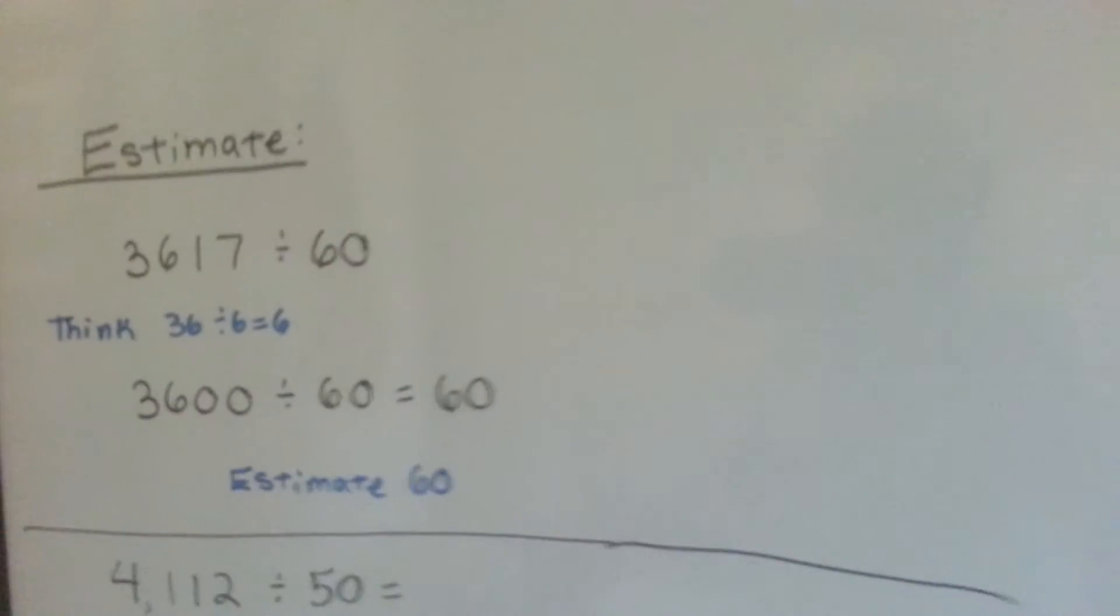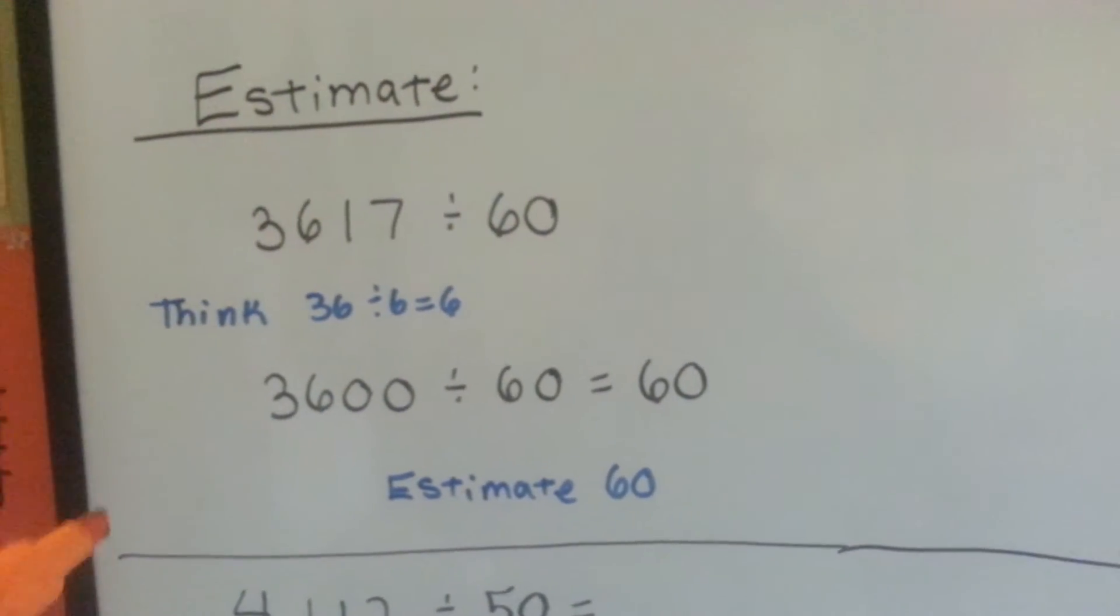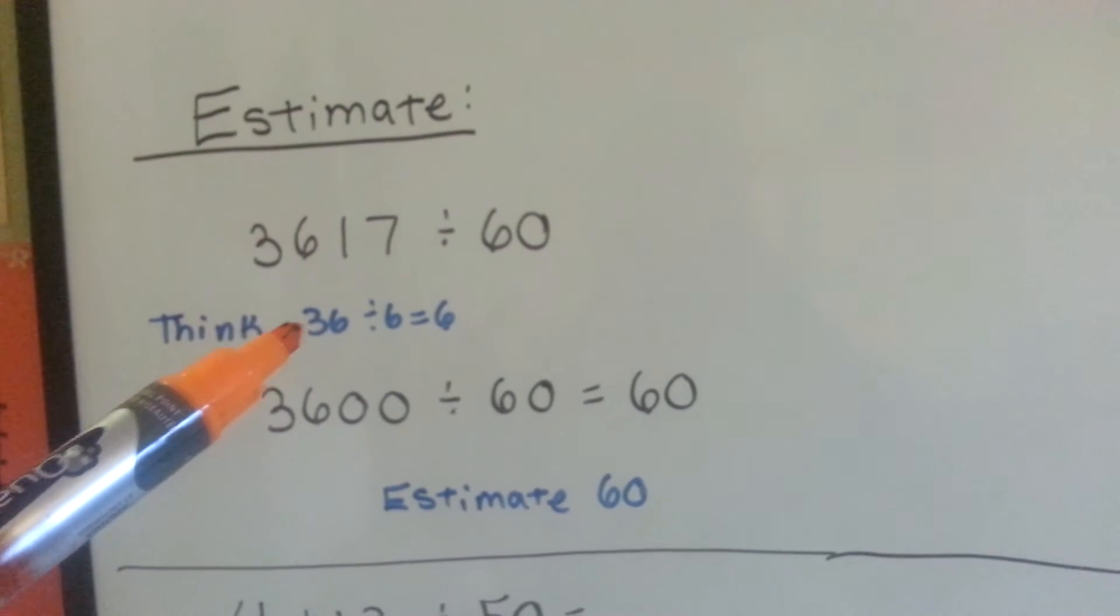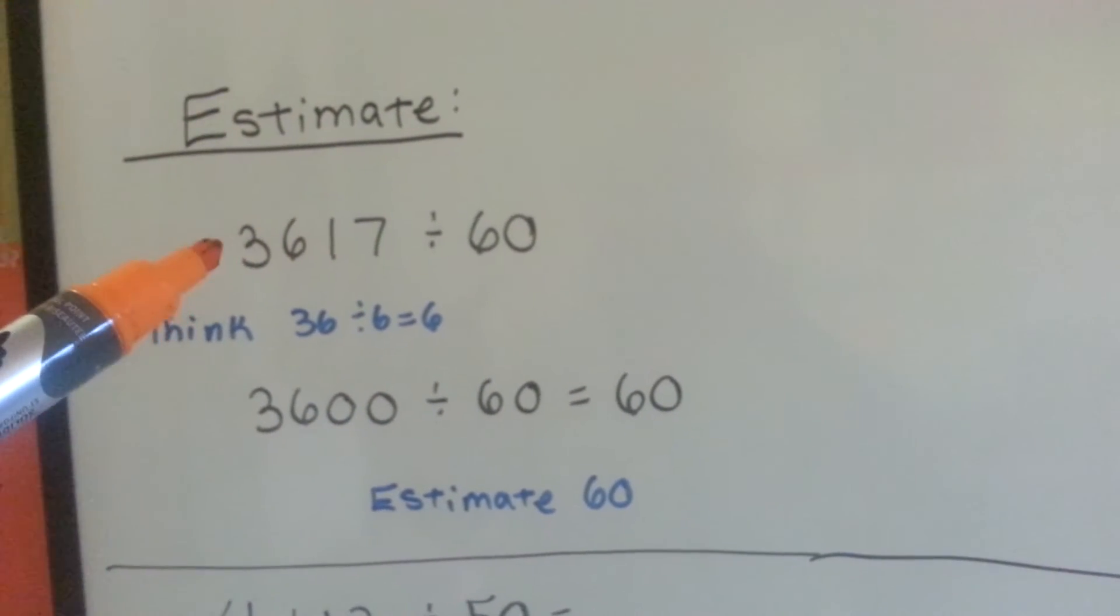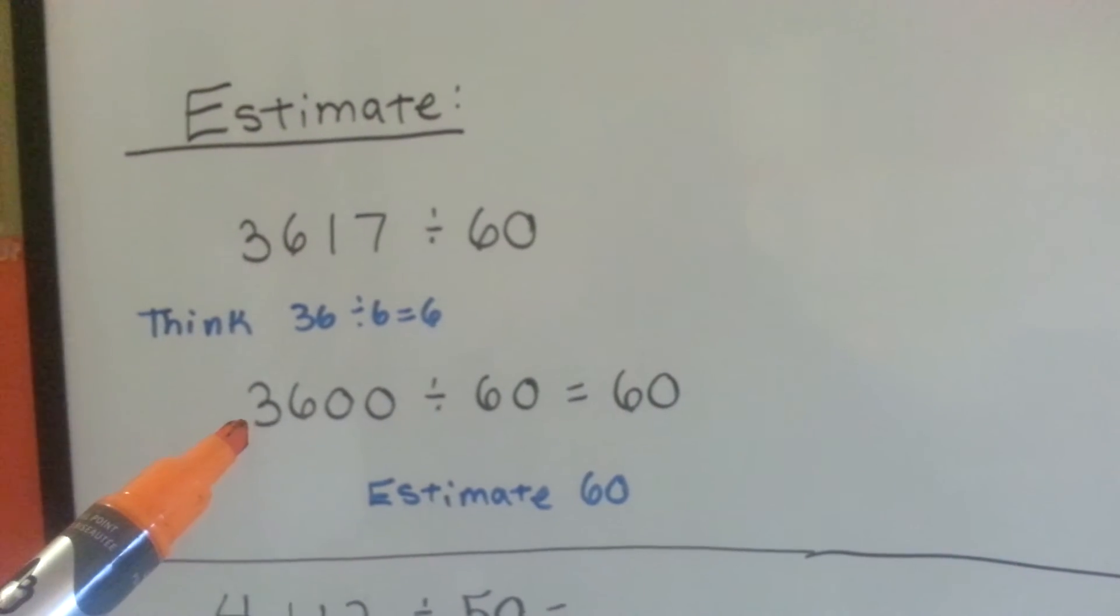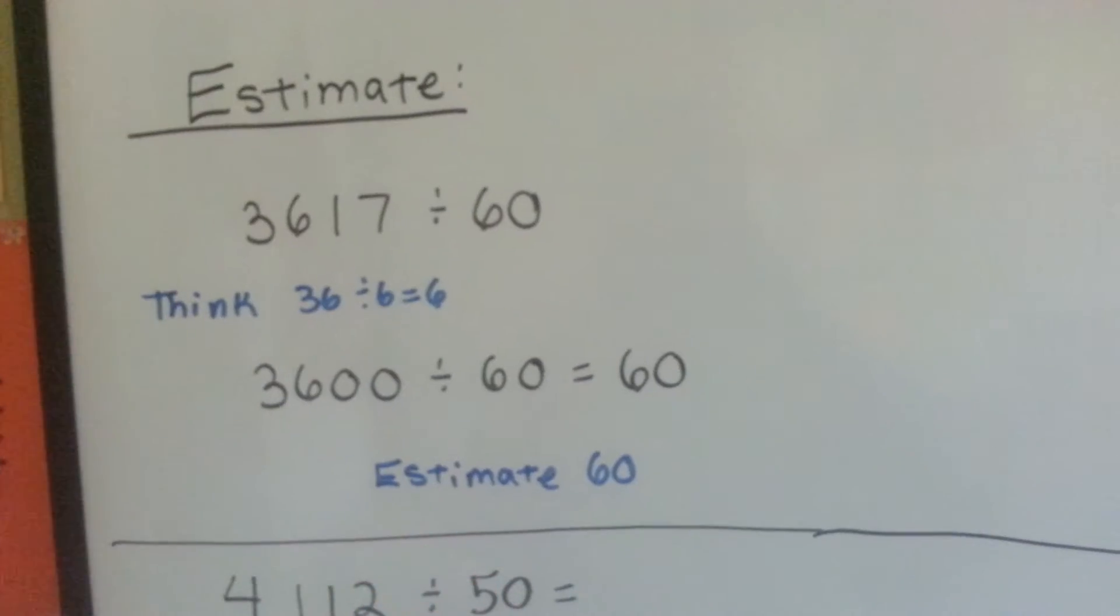So if we needed to estimate for this one and we had 3,617 divided by 60, we could think 36 divided by 6 is 6. We could round this to 3,600 and say 3,600 divided by 60 is 60. Our estimate is 60.